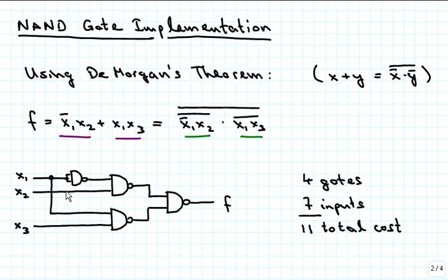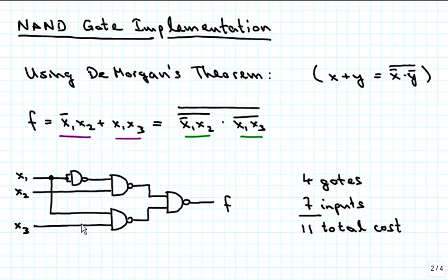To emphasize that we are only using NAND gates, we also replace the inverter by a NAND gate with its two inputs tied together, which makes it act as an inverter. So x1 gets inverted, ANDed with x2, and inverted through the first NAND gate. Similarly, x1 ANDed with x3 is inverted through the second NAND gate. Those two outputs get ANDed and inverted through the final NAND gate to produce f. The cost is the same: 4 gates, 7 inputs, total cost of 11.